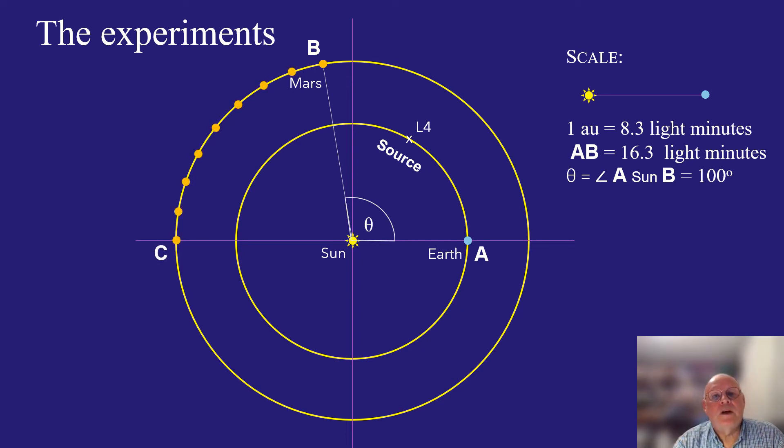We can extend the experiment by performing it over a large portion of Mars's orbit, shown here from C to B. At C, Mars is in conjunction with, in the same direction as, the Sun.